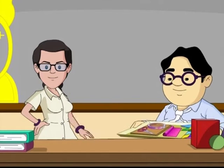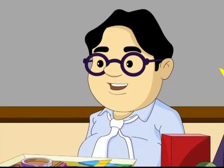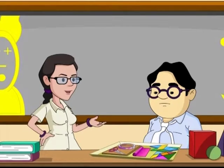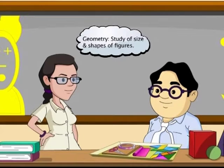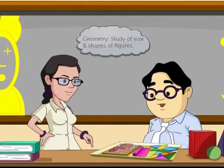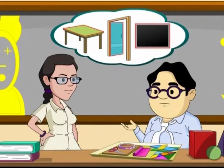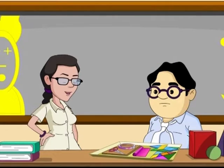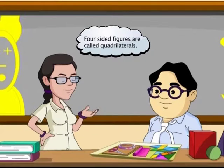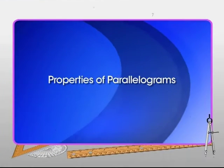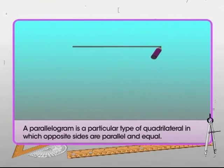Hello and welcome to Math for Juniors with me, Miss Marks, and my assistant Snail. No craft class today, Snail — it's math class! We are talking about size and shapes — geometry. Look at the table top, the blackboard, the door frame — what do they have in common? They all have four sides! Four-sided figures are called quadrilaterals, and today we are going to talk about a special kind called a parallelogram.